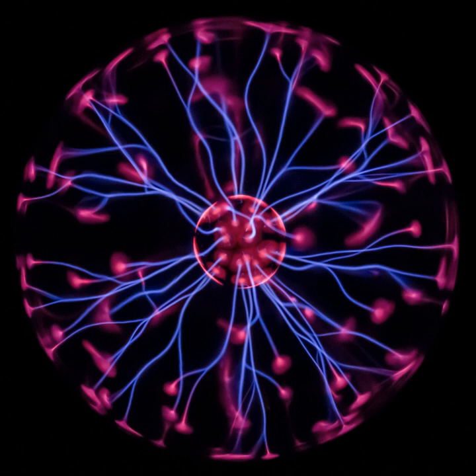An electric current is produced within any conductive object near the orb. The glass acts as a dielectric in a capacitor formed between the ionized gas and the hand.